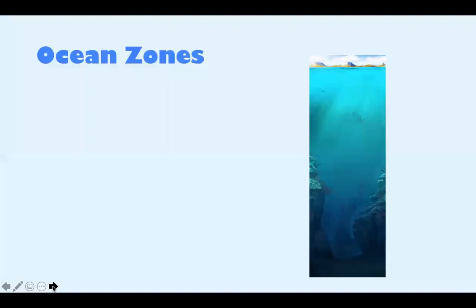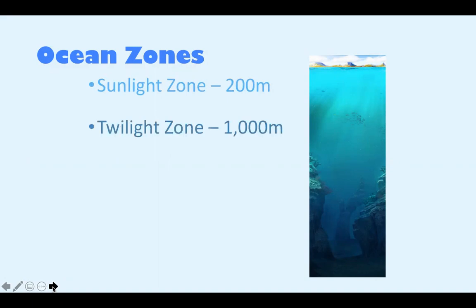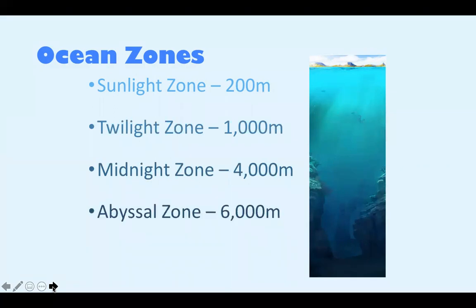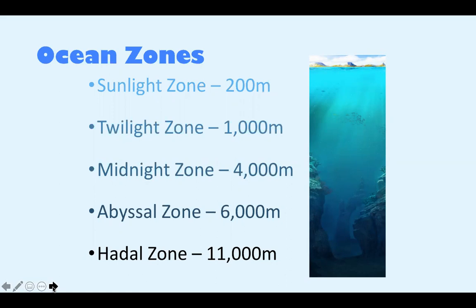Ocean zones are basically layers of the ocean at different depths. There are five zones in the ocean. These are the sunlight zone, which goes from zero to 200 meters; the twilight zone, from 200 to 1,000 meters; the midnight zone, from 1,000 to 4,000 meters; the abyssal zone, from 4,000 to 6,000 meters; and the hadal zone, also known as the trench zone, from 6,000 to 11,000 meters. We'll start at the top of the ocean and give more details about each one.